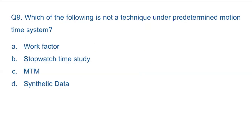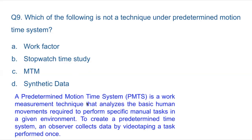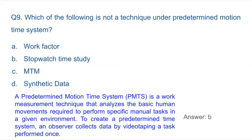Question 9: Which of the following is NOT a technique under the Pre-Determined Motion Time System (PMTS)? PMTS is a work measurement technique that analyzes basic human movements required to perform specific manual tasks. Options include: Work Factor, Stopwatch Time Study, MTM. Stopwatch time study is NOT part of PMTS because in stopwatch time study you time a process as it is being done — it is not pre-determined. Answer: Stopwatch time study.